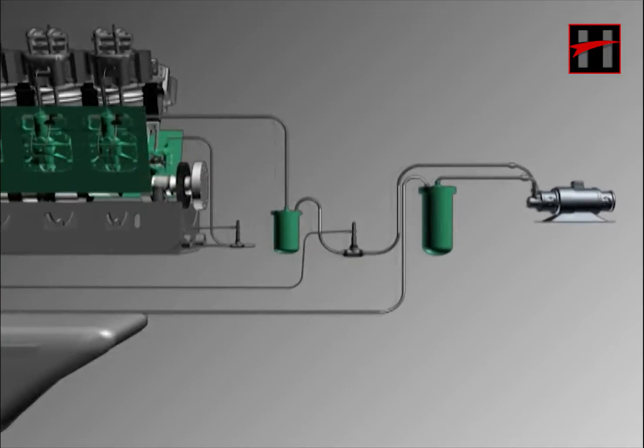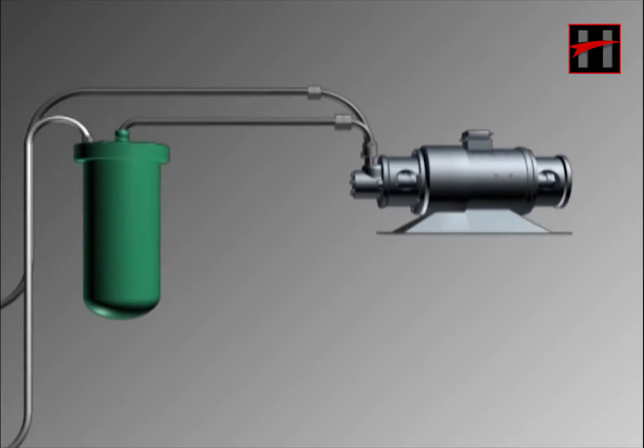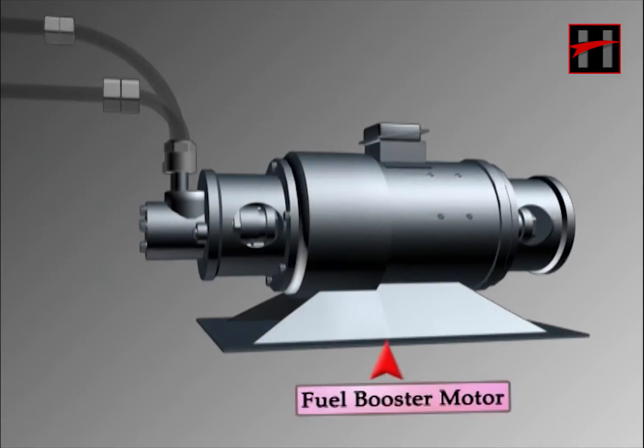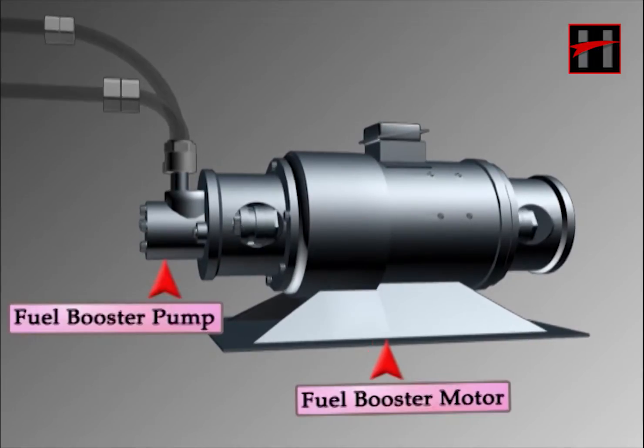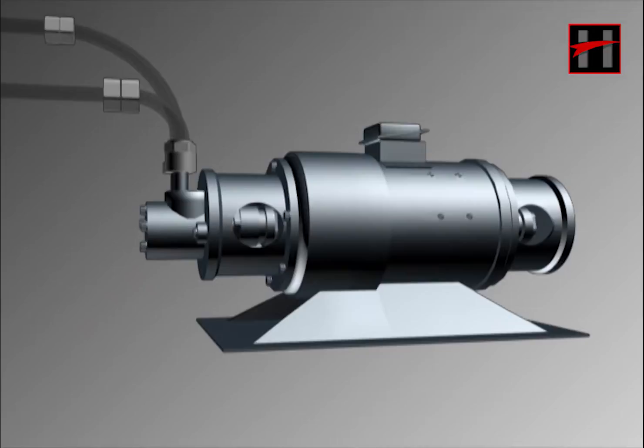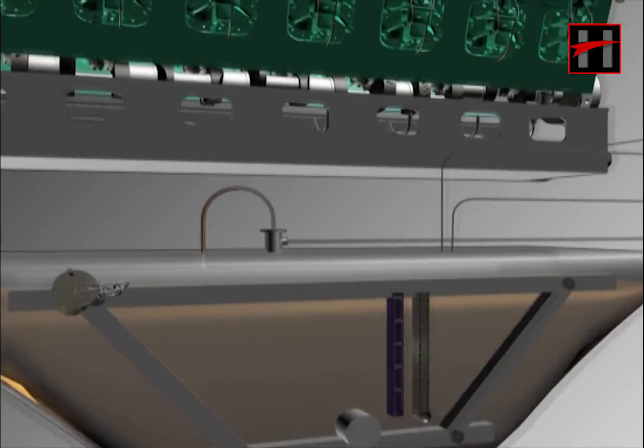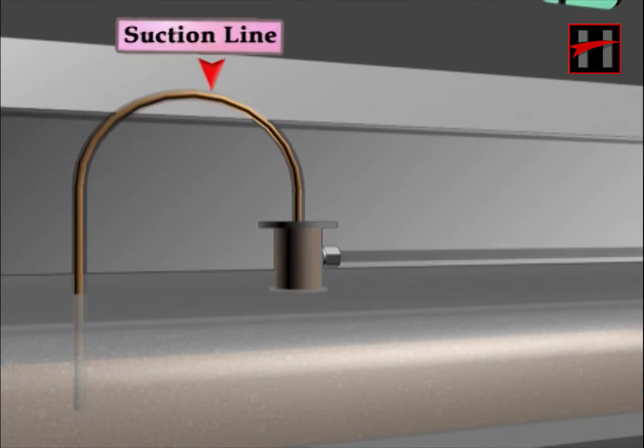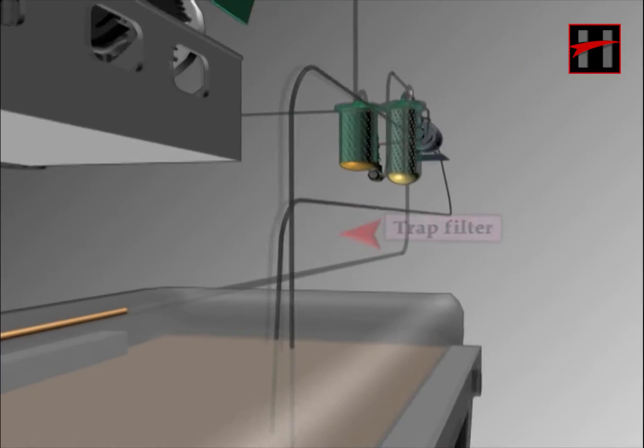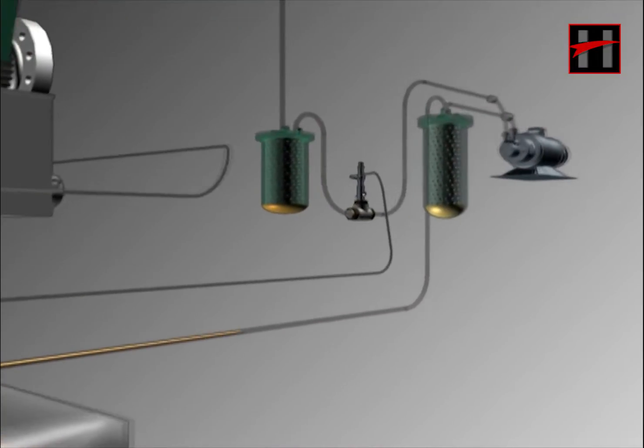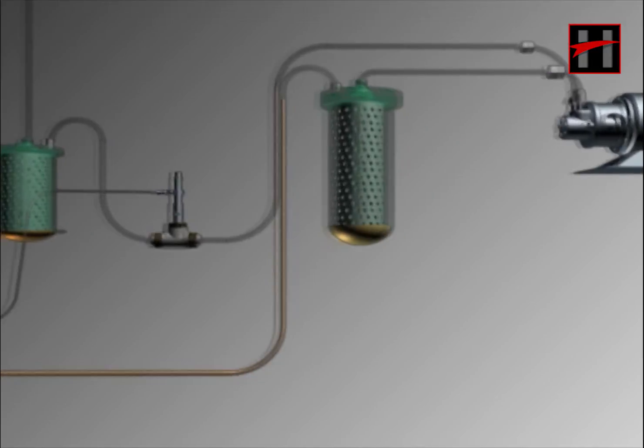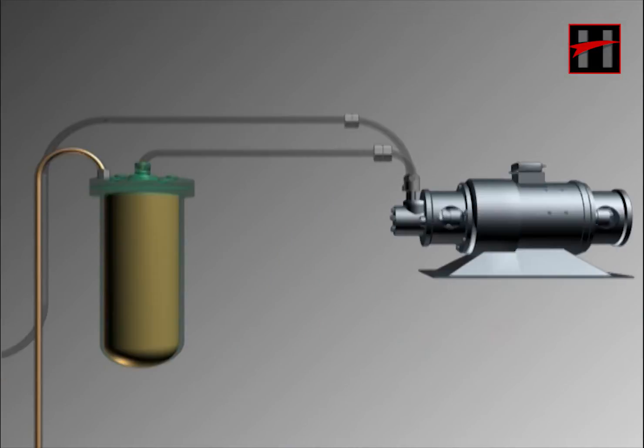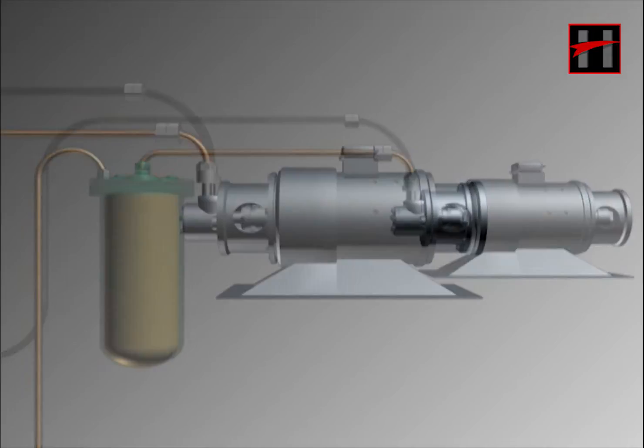When the fuel booster motor is started, the fuel booster pump starts creating a vacuum. Because of this vacuum, fuel oil from the suction line of the fuel tank gets filtered through the trap filter and goes into the primary filter.